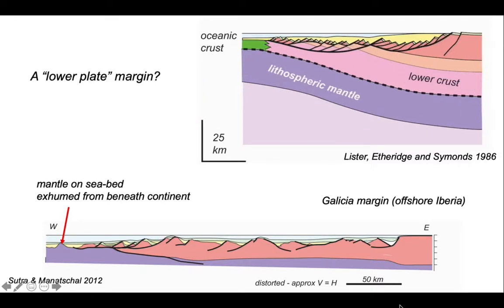Are we dealing with a lower plate margin? Whatever we're dealing with, we're dealing with highly extended continental lithosphere, a phenomenon that is now referred to as hyperextension. We have mantle on the seabed exhumed from beneath continent, so we've stretched the lithosphere so much that the crust has been pulled away.